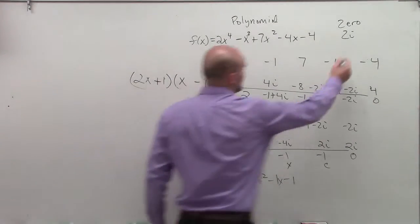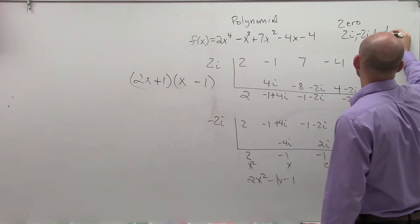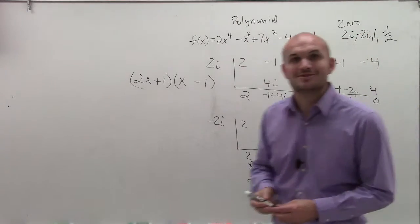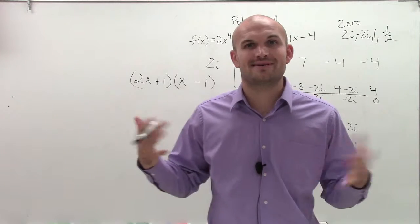So therefore, my zeros are 2i, negative 2i, 1 half, and negative 1. So there you go, ladies and gentlemen. You can just use synthetic division with complex zeros. Hope you enjoyed. Thanks again.